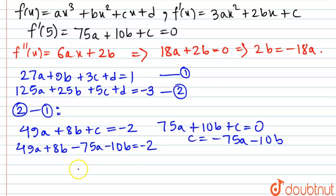Would be giving us -26a here, 49 minus 75, -26a plus, not plus but minus 2b, actually minus 2b = -2. Now we have just found -2b to be +18a.